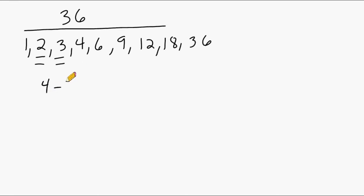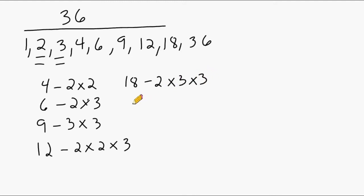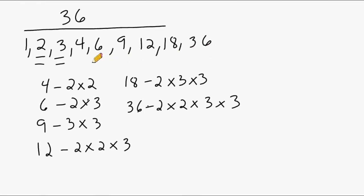For the number 4, we have 2 times 2. For the number 6, we can multiply 2 times 3. For the number 9, we can multiply 3 times 3. For the number 12, we can multiply 2 times 2 times 3. For the number 18, we can multiply 2 times 3 times 3. And for the number 36, we can multiply 2 times 2 times 3 times 3. So the prime factorization of 36 is 2 times 2 times 3 times 3.